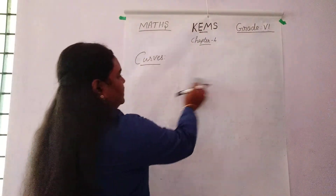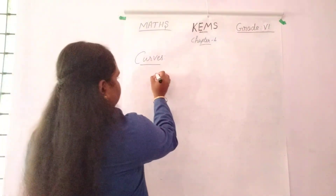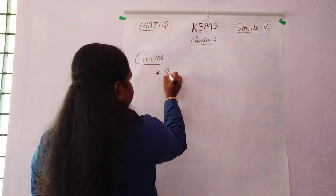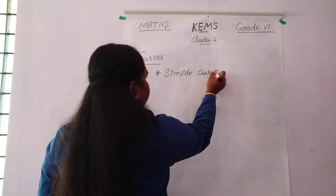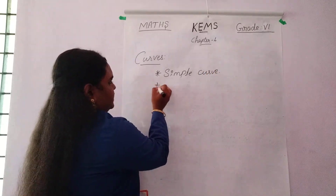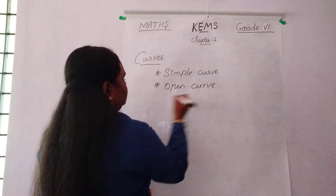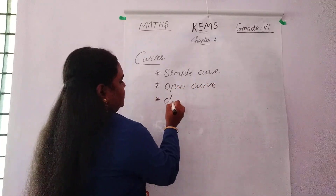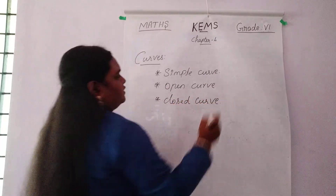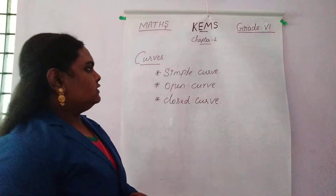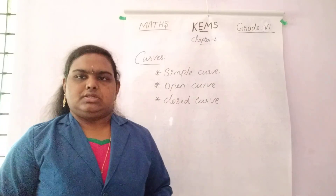In this curve there are three types. The first one is simple curve, the next one is open curve, and then the third one is closed curve.